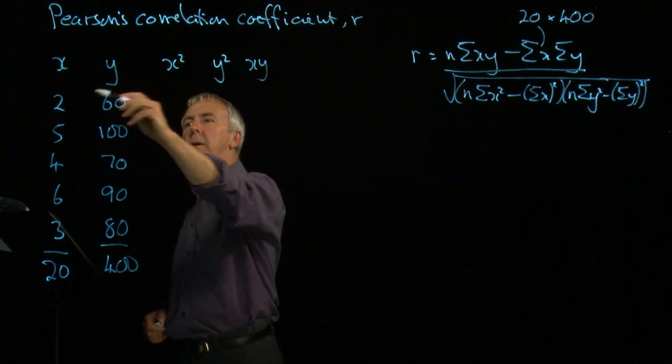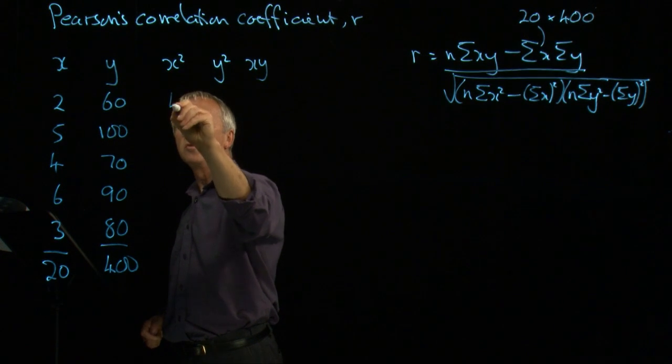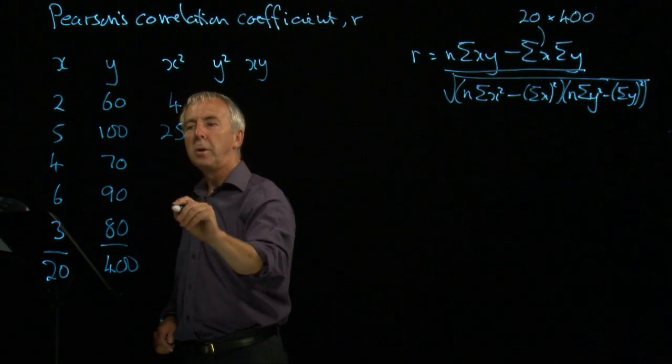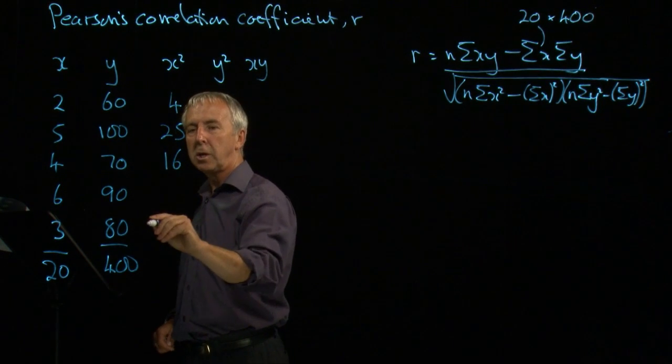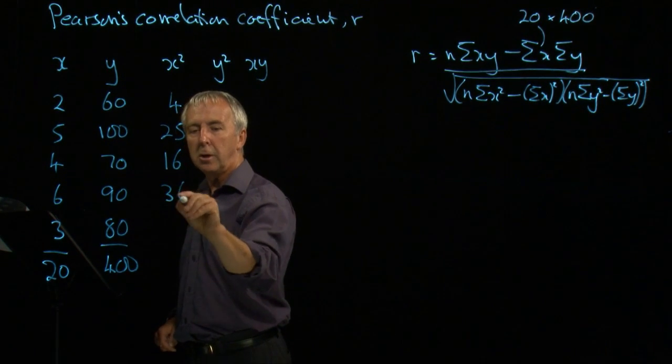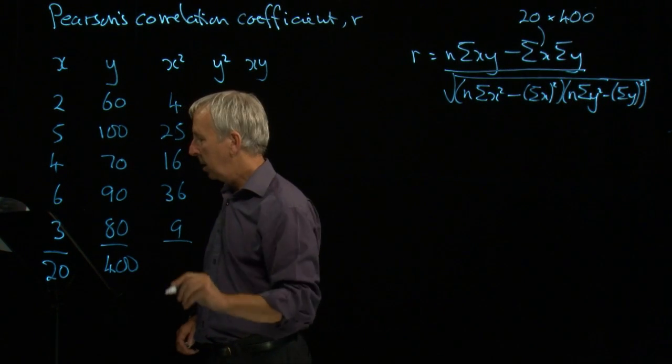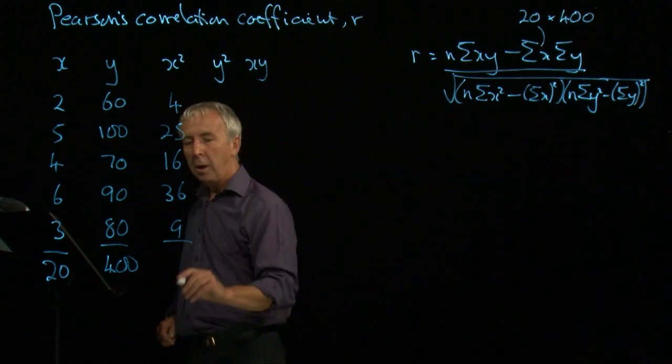So for x squared, if x is 2, 2 squared is 4, x is 5, 5 squared is 25, 4 squared is 16, 6 squared is 36, 3 squared is 9. If I add those up, I get 90.